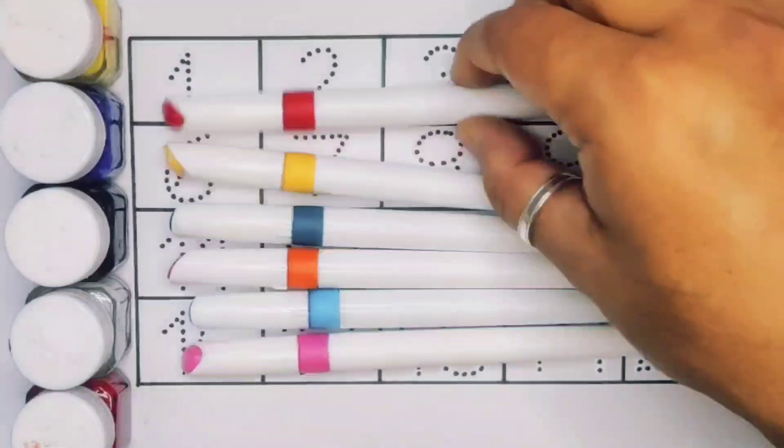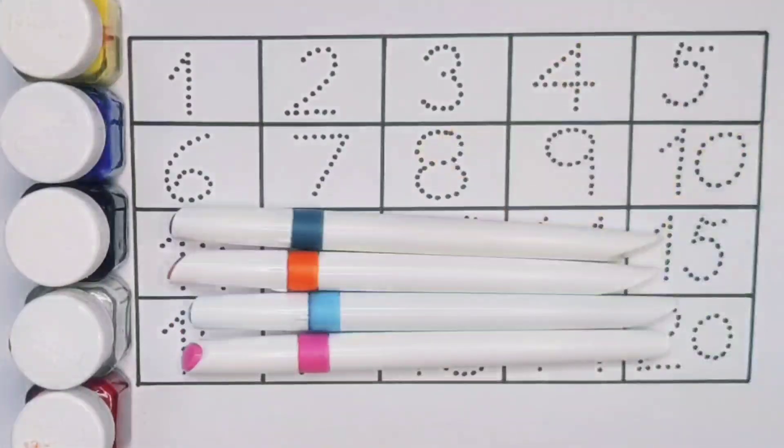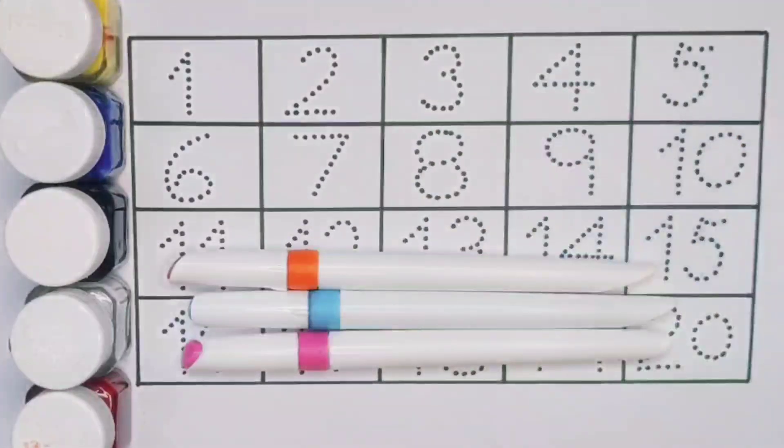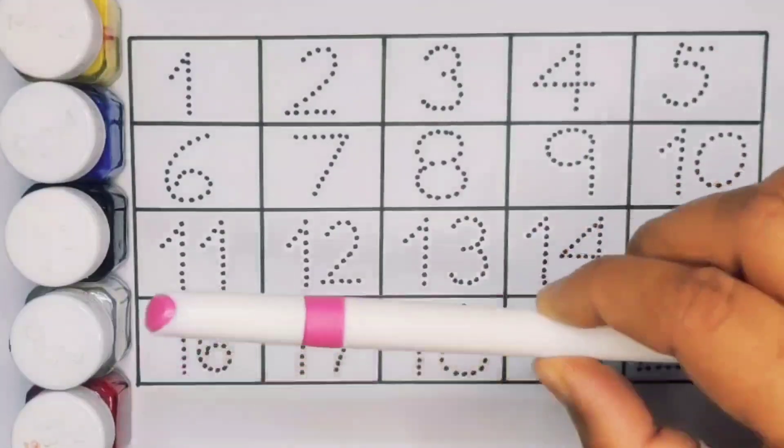First we're going to know the colors name. Light green color, red color, yellow color, sea green color, orange color, sky blue color and pink color.